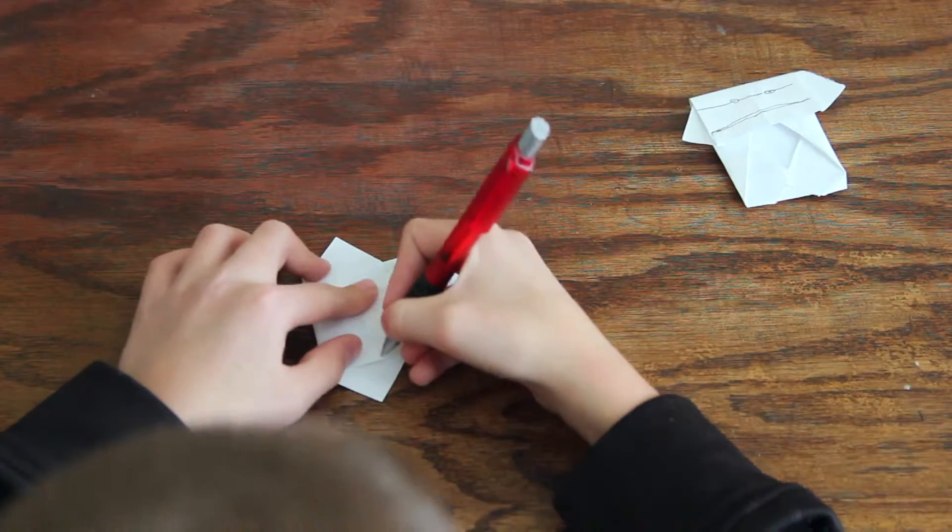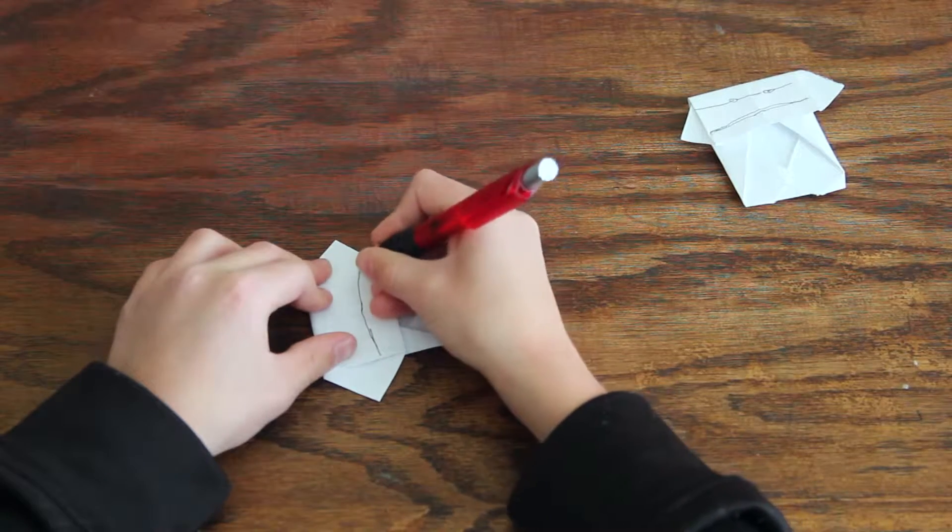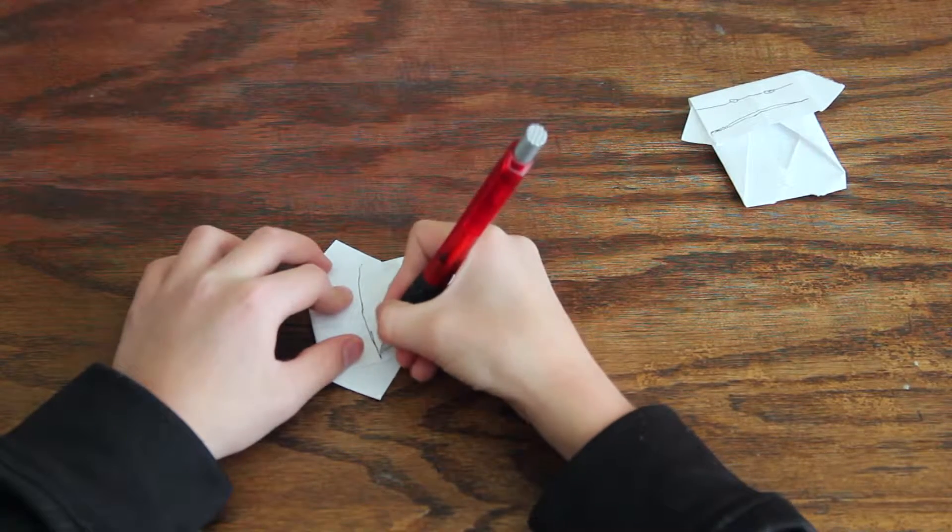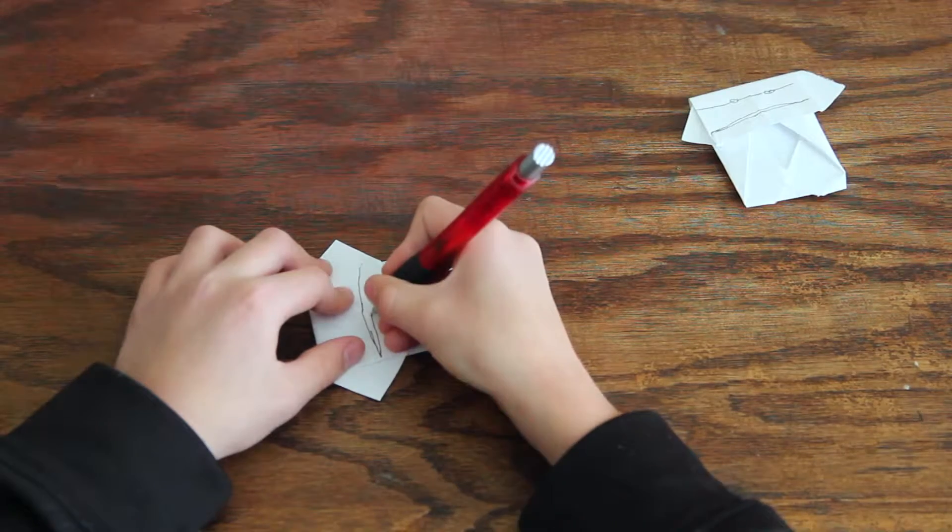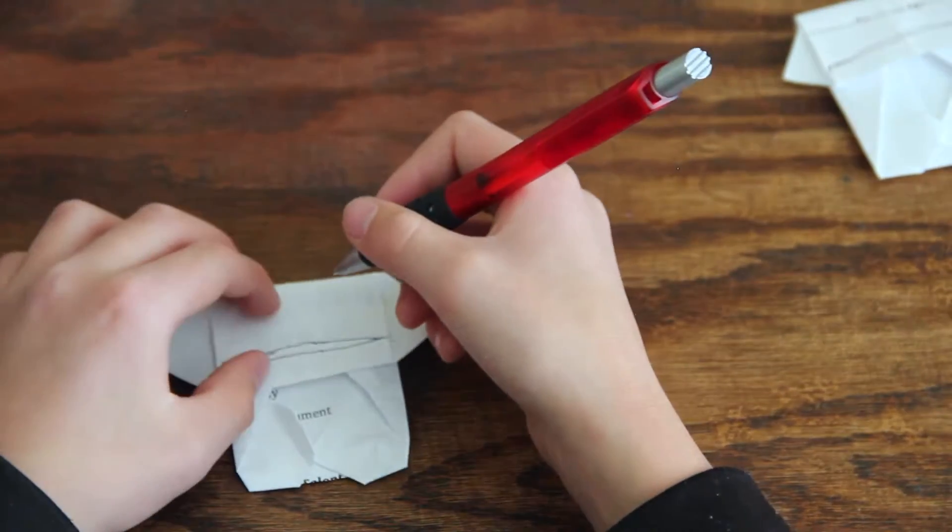And let's start with the mouth because it's a little easier. So you have to draw a curved line like this, and you do the same with the bottom, just like this. And so there's the mouth.